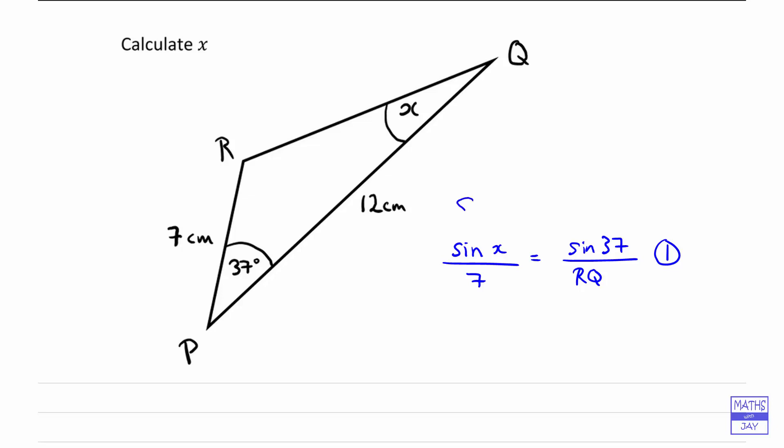So we've started off using the sine rule and that will help us later on, but now we want to look at the cosine rule and that tells us the side that we want, so that's RQ and the square of that side, so RQ squared